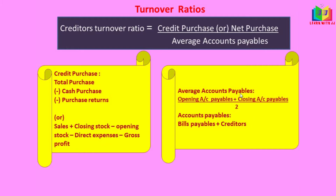Average accounts payable is opening accounts payable plus closing accounts payable divided by two. Accounts payable is bills payable plus creditors. If we add bills payable and creditors we get accounts payables — opening accounts payables for the opening balance and closing accounts payables for the closing balance.